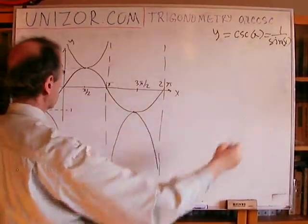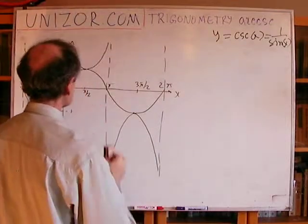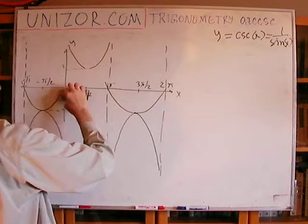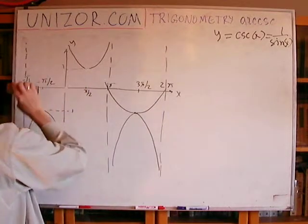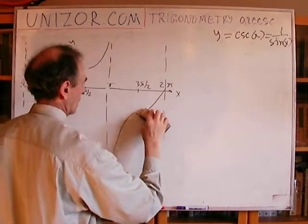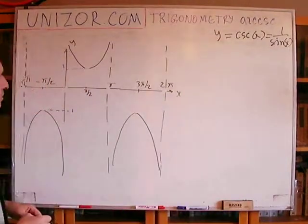And same thing here. And obviously, it's all repeated many times. So let me wipe out the sine, so I will have only the cosecant. Alright. We've got the function for cosecant.